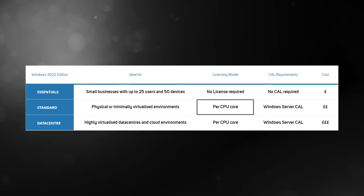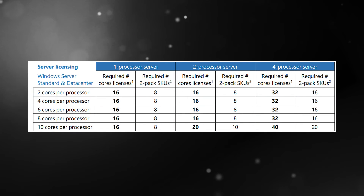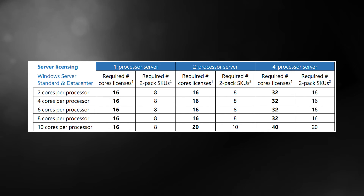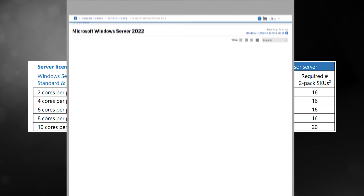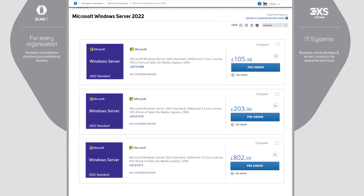When it comes to the Standard and Data Center Editions, they're licensed per physical CPU core. The standard installations are licensed for 16 or 24 CPU cores, so if your server has more cores than this, you'll need to buy additional CPU license packs, and these are available in various multiples such as 2, 4, and 16 additional cores.